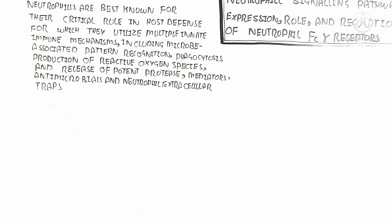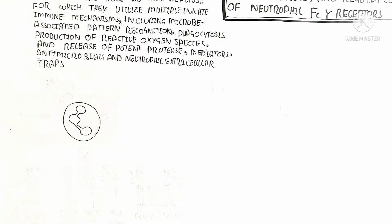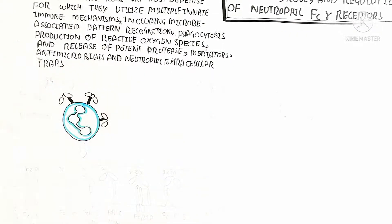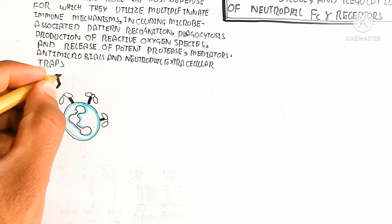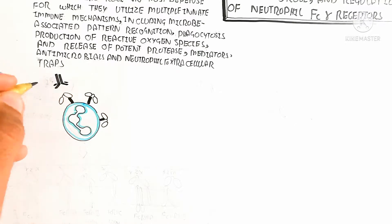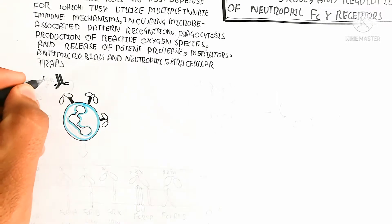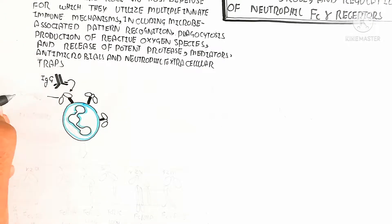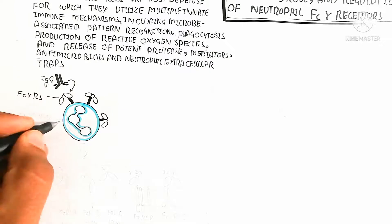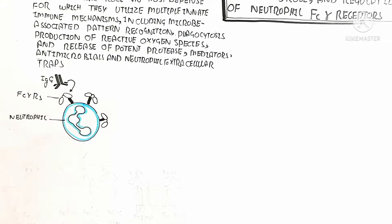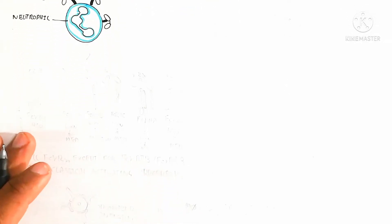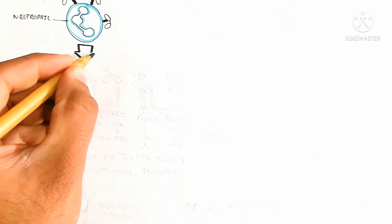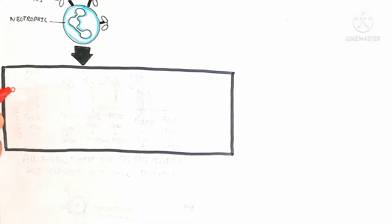Here I am drawing the neutrophil structure, which contains 3 lobes in the nucleus. This is the neutrophil, which contains the Fc gamma receptor. The immunoglobulin, which is the antibody, is present here and binds with the Fc portion — it binds here with the Fc portion.